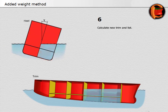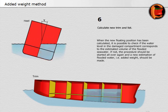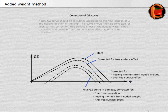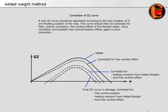Step 6 — calculate new trim and list. When the new floating position has been calculated, it is possible to check if the water level in the damaged compartment corresponds to the estimated volume of the flooded seawater. If not, the procedure should be started all over again, and a new estimation of flooded water — that is, added weight — should be made. Correction of GZ curve: a new GZ curve should be calculated according to the new location of G and floating position of the ship. This curve should then be corrected for heel (cosines correction), free surface effect of the flooded water (sinus correction), and possible free communication effect (again, a sinus correction).